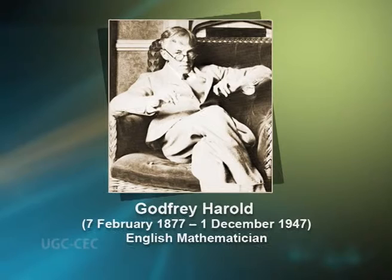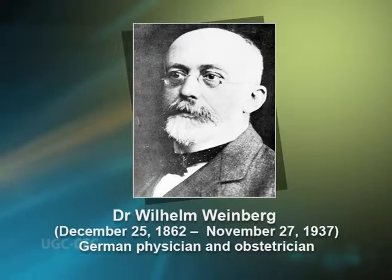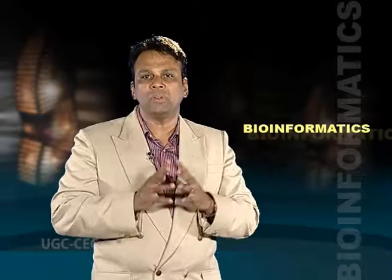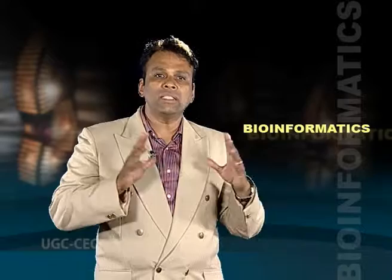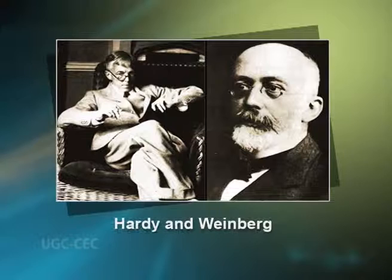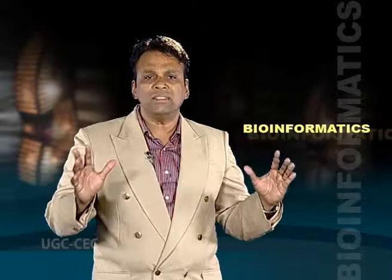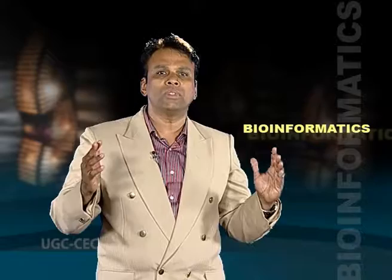In 1908, an English mathematician Hardy and Weinberg, a German physician, independently discovered that an equilibrium is established between frequencies of genes in a random mating population, and discovered a principle concerned with the frequency of genes in a population. Hardy and Weinberg showed that in the absence of genetic forces such as mutation, selection, genetic drift, and migration, the relative frequencies of each gene tend to remain constant — that is, genetic equilibrium — from generation to generation in the Mendelian population, regardless of their dominance and recessive relationship.